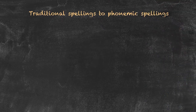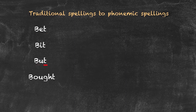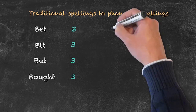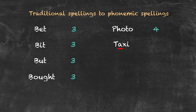Now let's take a look at how we go from traditional spellings into phonemic spellings. The first step is identifying each unit of sound — each phoneme — within a word. Let's look at 'bet,' 'bit,' 'butt,' and 'bought.' The only difference in each of these words is the vowel sound, and each word simply uses three sounds. Now we have 'photo' — F-O-T-O — that's four phonemes. And 'taxi' — T-A-K-S-E — that's five phonemes.